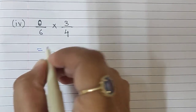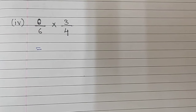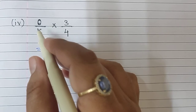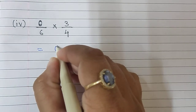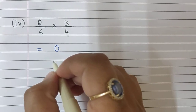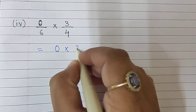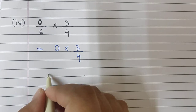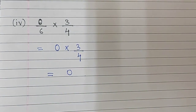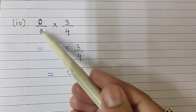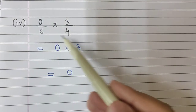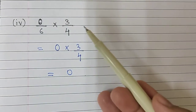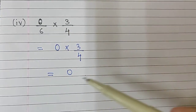However, since we have 0 upon 6 — anything that has 0 in the numerator will definitely become only 0. The denominator doesn't matter. 0 multiplied by 3 upon 4: if you multiply anything by 0 your answer is going to be 0. Note that if there were a 0 in the denominator then it would not even be a rational number. But with 0 in the numerator and multiplication, the entire expression becomes 0.